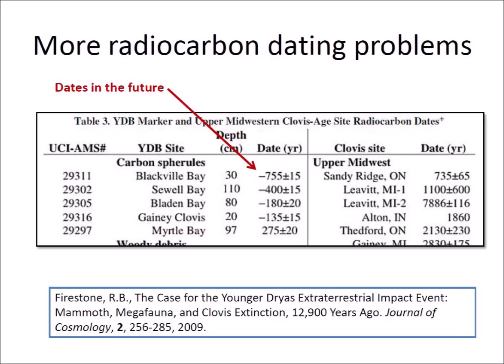In 2009, Richard Firestone reported that the carbon spherules from the Carolina Bays and from the Gainey-Clovis site were radiocarbon dated at the Keck Carbon Cycle AMS facility at the University of California in Irvine. The dates summarized in this table vary from 275 years before the present to 755 years in the future. These dates are inconsistent with the age inferred by the stratigraphy of the samples and strongly suggest that the carbon spherules are enriched by a factor of about 5 in carbon-14. Results like this are very frustrating for the researchers because they may reflect improper methodology or sample contamination.